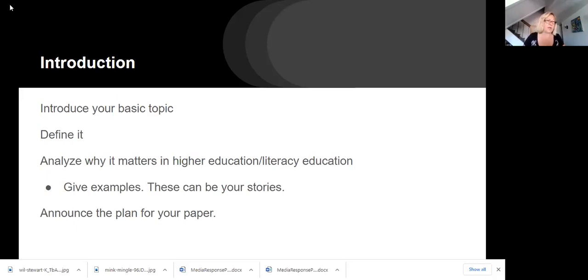But colorblindness is colorblindness. As you're narrowing the topic from just colorblindness to colorblindness in higher education, specifically literacy education, define it and then analyze why it matters in higher education. Give an example. It might be graduation rates, which are lower for students of color in higher education, statistically. It might be your own personal story. It might be the story of your family. It might be the story of a friend. Give an example. And then announce your plan for the paper.